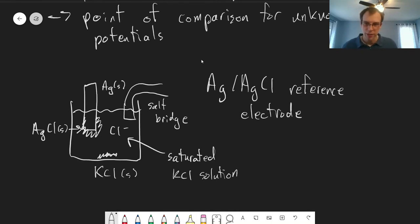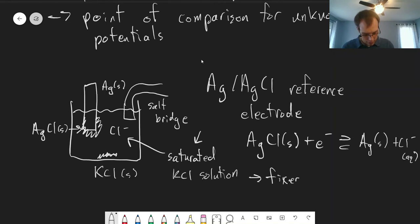We have a silver wire and silver chloride. The reduction reaction we'd write for this is AgCl(s) + e⁻ → Ag(s) + Cl⁻(aq). What makes this useful as a reference electrode—why we can get a nice stable potential—is this saturated KCl solution. It gives us a fixed chloride concentration.